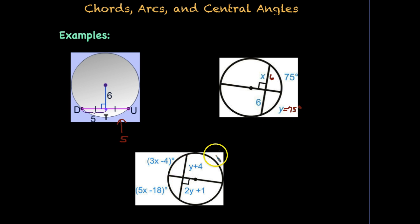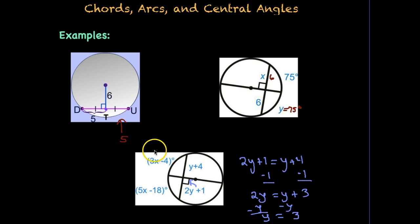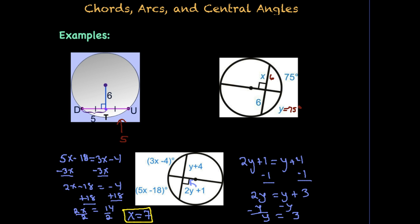In the final easy example, we have a perpendicular bisector creating a 90-degree angle on both sides. We can either set 2y + 1 equal to 90 and solve, or set the angles equal: 2y + 1 = y + 4, giving y = 3. For the arcs, since the perpendicular bisector bisects the arcs as well, we set the two arc expressions equal to each other and solve, ending up with x = 7.